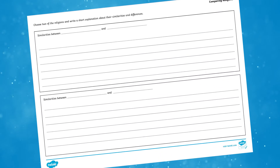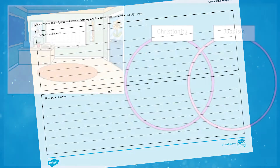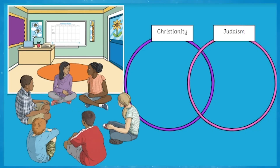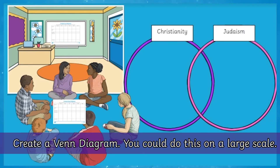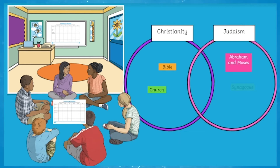Once the children have completed their research, they will be asked to choose two religions and write a short explanation about their similarities and differences. Why not try bringing in some more active learning here? Children could work together to create a Venn diagram to show some similarities and differences. You could even do this on a large scale using sports hoops and sticky notes for children to discuss and share their ideas, or even just use A3 paper.